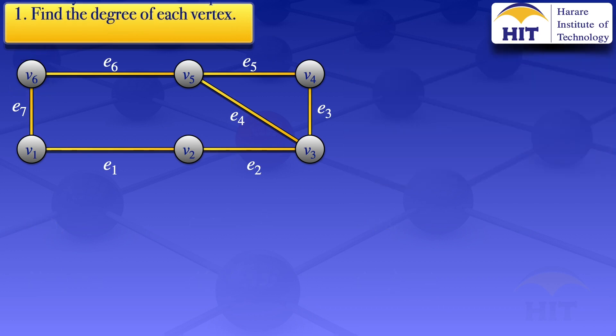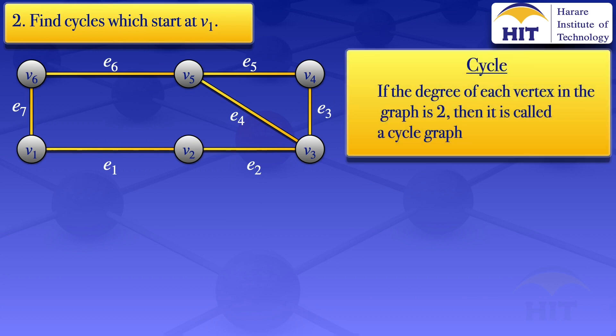I now move on to question number 2: finding cycles which start at v1. When looking at a cycle, the degree of each vertex in the graph is 2. So we are looking at subgraphs of the given graph where each vertex would have a degree of 2. I can highlight a subgraph of that given graph with a red line, moving counterclockwise. That subgraph passes through v1, v2, v3, v4, v5, v6, and for all those highlighted vertices, the degree is 2.